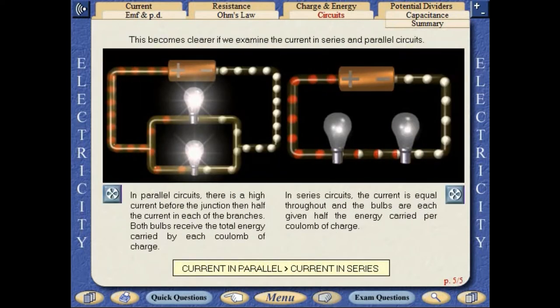This becomes clearer if we examine the current in series and parallel circuits. In parallel circuits there is a high current before the junction, then half the current in each of the branches. Both bulbs receive the total energy carried by each coulomb of charge. In series circuits the current is equal throughout and the bulbs are each given half the energy carried per coulomb of charge.